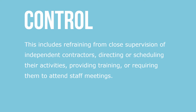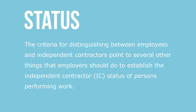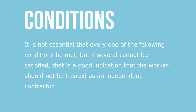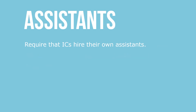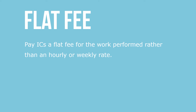The criteria for distinguishing between employees and independent contractors points to several other things employers should do to establish independent contractor status. It is not essential that every one of the following conditions be met, but if several cannot be satisfied, that's a good indication the worker should not be treated as an independent contractor. First, require that independent contractors supply their own tools, materials, and equipment, pay their own business expenses, and hire their own assistants.